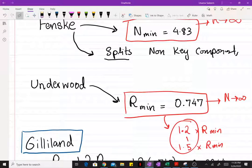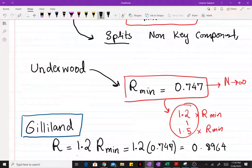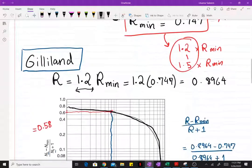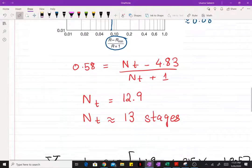Then you use the Underwood equations to find the minimum reflux ratio. You choose an operating reflux ratio, which we chose to be 1.2 times the minimum reflux ratio. And then based on the Gilliland correlation, you find the theoretical number of stages.